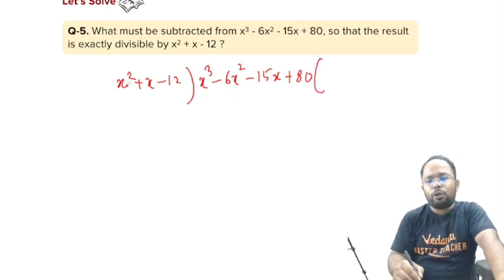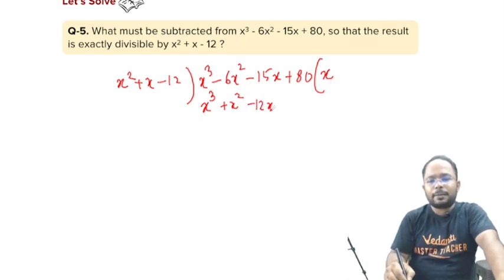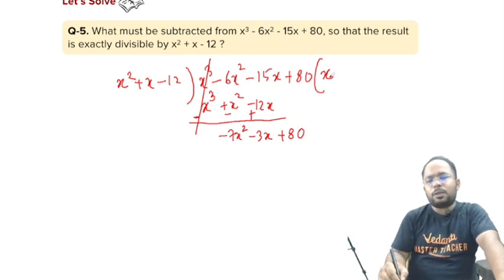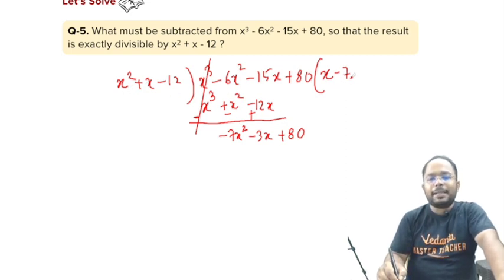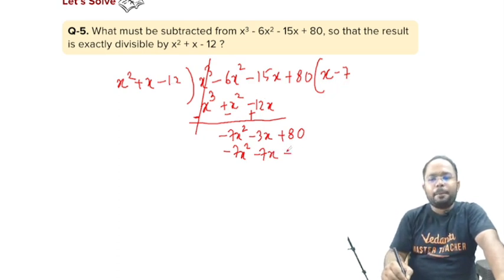First of all, x³ we want, so x² multiplied by x, we get x³. Plus x into x, it gives you +x², minus 12 into x gives you -12x. Now, we will change the sign as it is a subtraction. This gets cancelled, -6x² - x² is -7x², minus plus minus, so -15 - (-12) is -3x + 80. Now -7x², what we can get? x² multiplied by -7, so we get -7x², plus x into -7, it gives you -7x and -12 into -7 is +84.